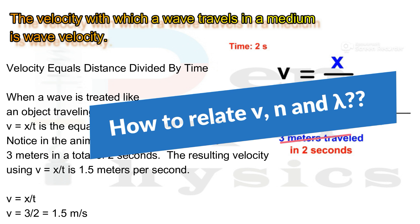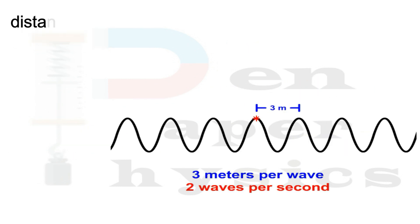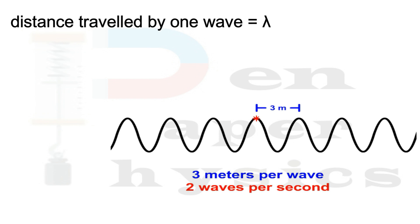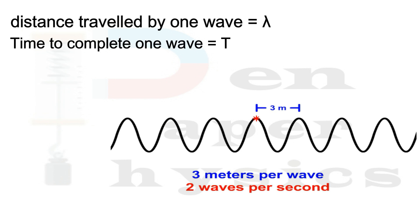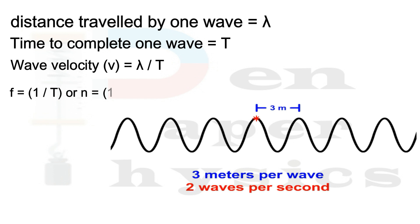Now we will learn how wave velocity, frequency, and wavelength are all related. The distance traveled by one wave is its wavelength, denoted by lambda. The time taken to complete one wave is T. Since wave velocity equals distance over time, wave velocity V equals lambda over T. Since 1/T equals frequency, we can say velocity equals frequency times wavelength — that is, V = fλ, or nλ according to some books. Both the symbols f and n are used to represent frequency.